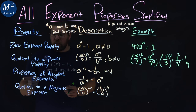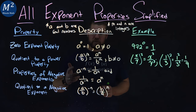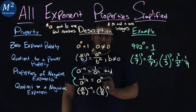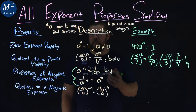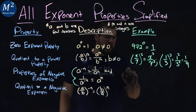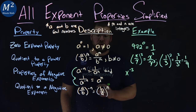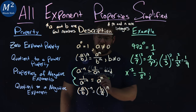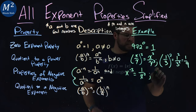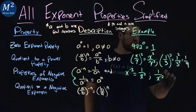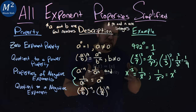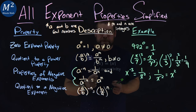Next are the properties of negative exponents — this one has two parts. First, a to the negative n power equals one over a to the n power. Second, one over a to the negative n power equals a to the positive n power. For example, x to the negative third becomes one over x to the positive third; and one over x to the negative two becomes x squared. Think of it as: a negative exponent moves to the opposite position — numerator or denominator — and becomes positive.